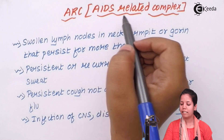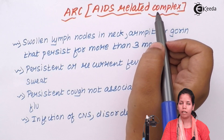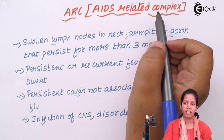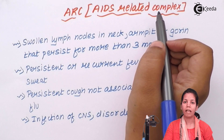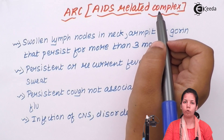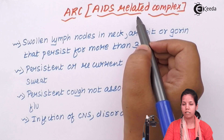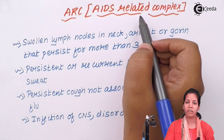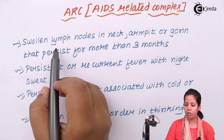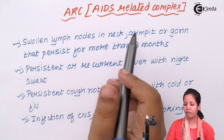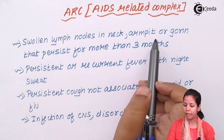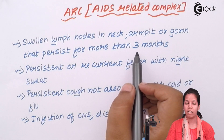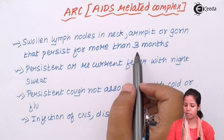ARC, or AIDS Related Complex, refers to those symptoms which are very similar and fully blown — a group of symptoms very common in AIDS patients who have reached the advanced stage. Swollen lymph nodes found around the neck, armpit, and groin that persist for more than three months are a sign of full blown AIDS.